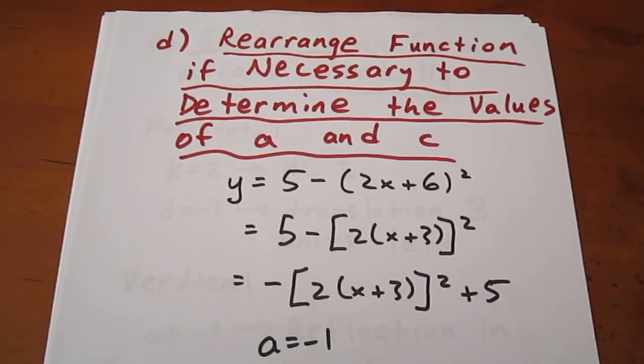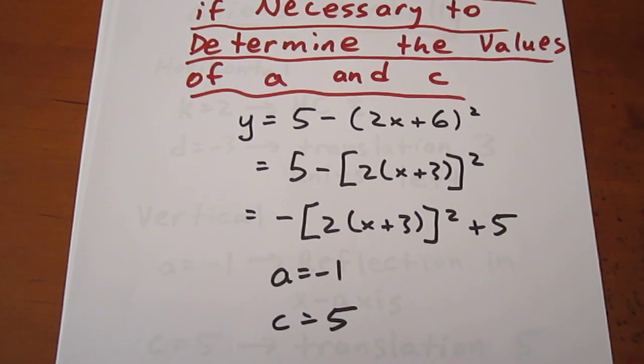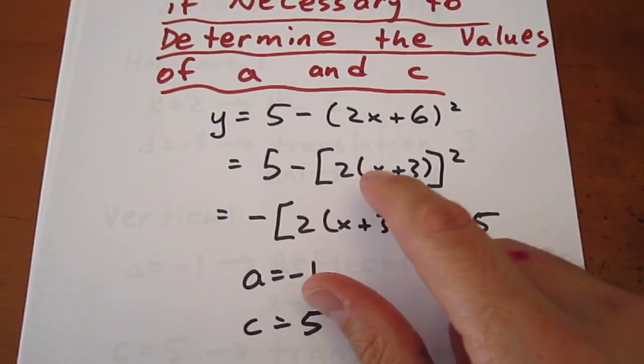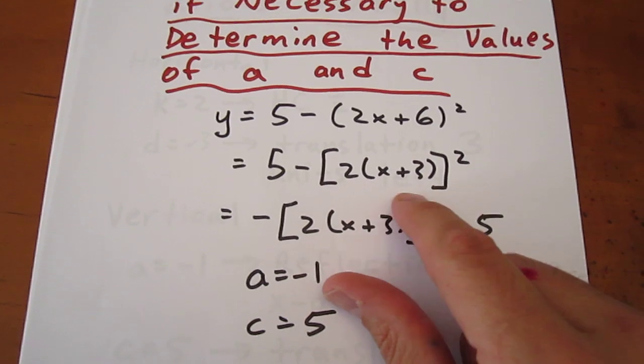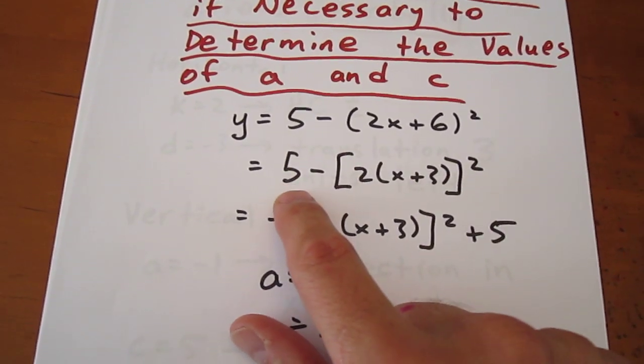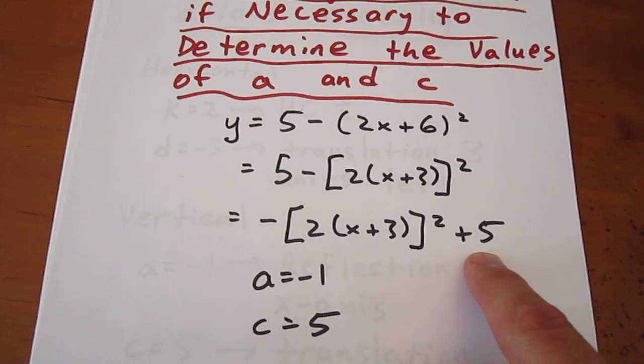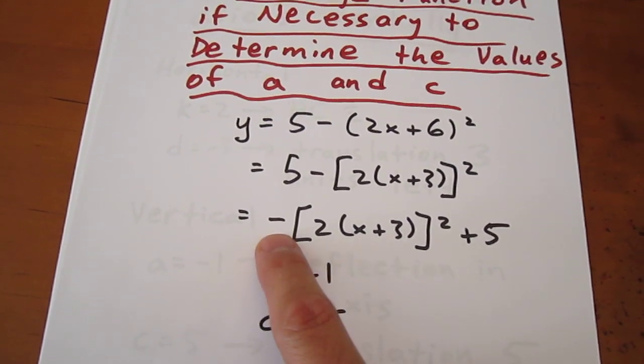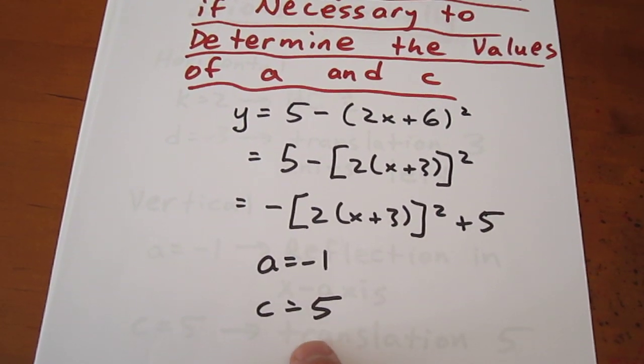What we can then do is determine the a and c values. So we can factor out the 2 to get our argument to look like this. Then take this term of 5, bring it to the other side, and what we have is an a value of negative 1 and a c value of 5.